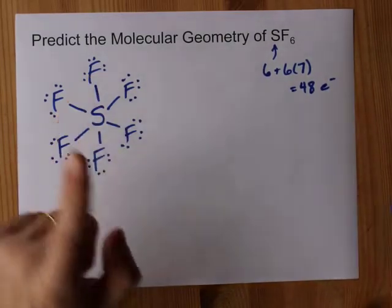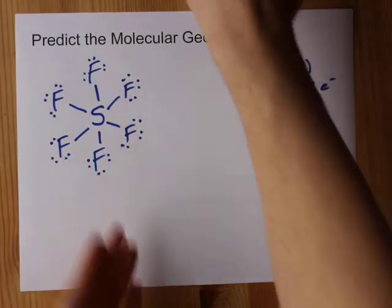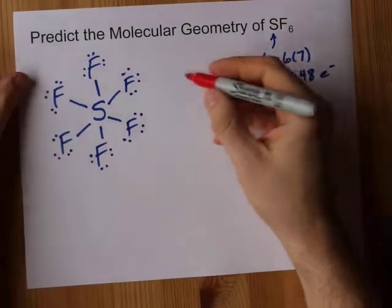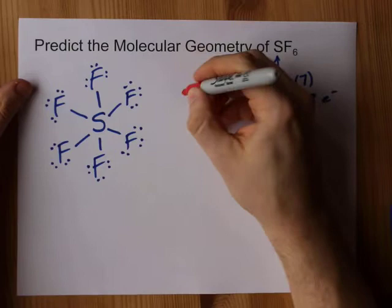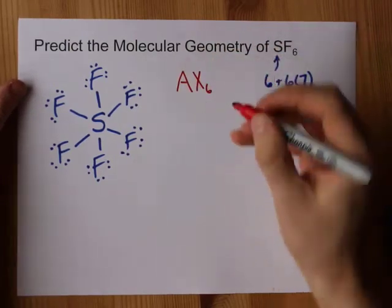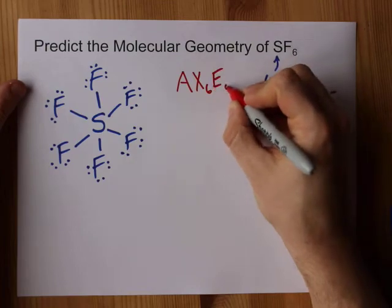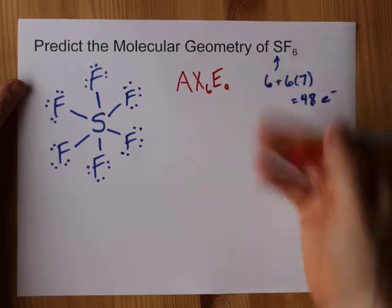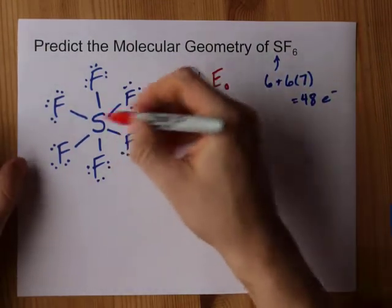This sulfur has six bonds and no lone pairs. In VSEPR land, they call that AX6 with a very optional E0. The E0 means no lone pairs.